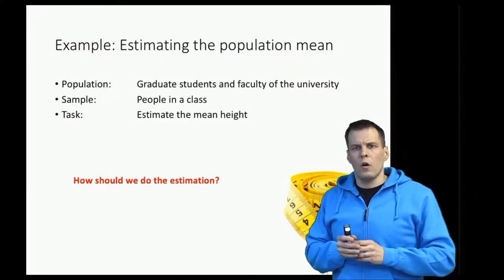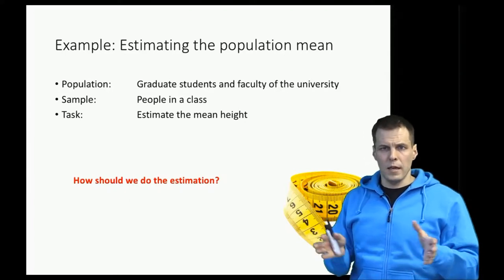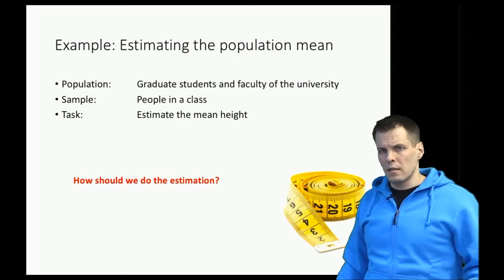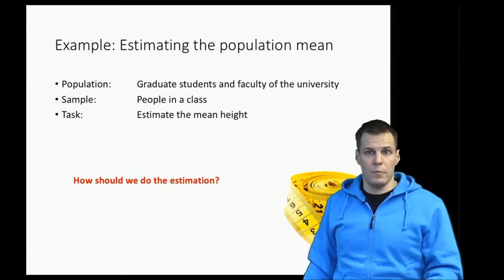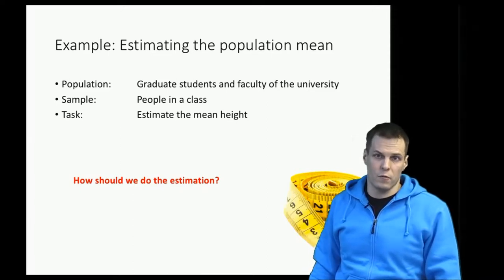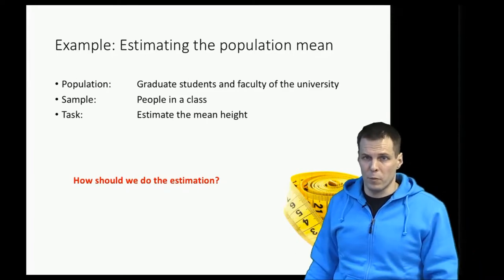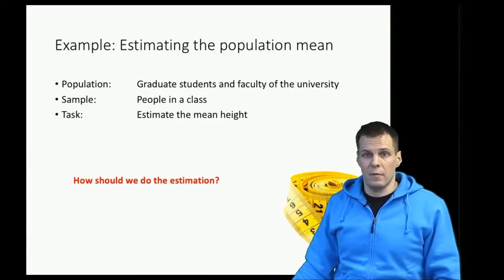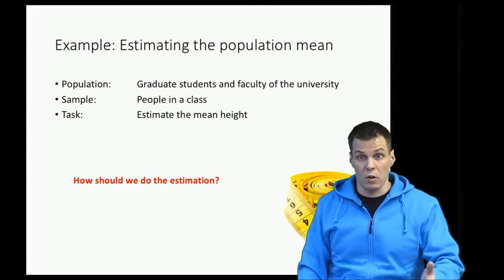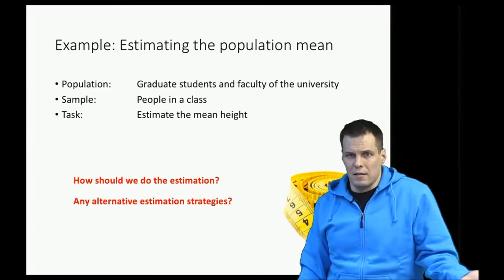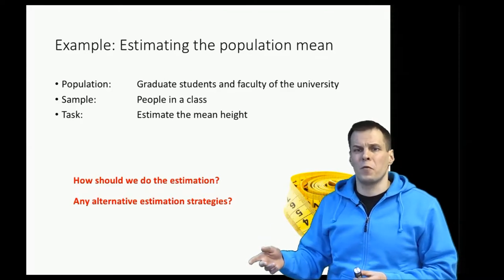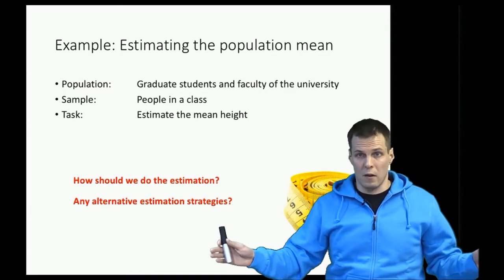So far we've only discussed the sample mean. Taking the mean of a sample is an obvious strategy for estimating the population mean, but it's not the only strategy. If you take a sample of 30 people and measure everybody's height, that takes time and effort. Alternatively, you could just measure the height of the first person you see — that gives a rough ballpark estimate. Another quick strategy is to have people self-organize into a line ordered by height and measure the person in the middle.